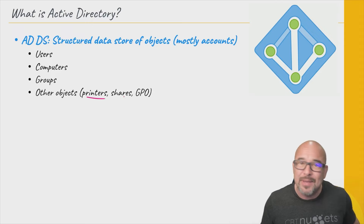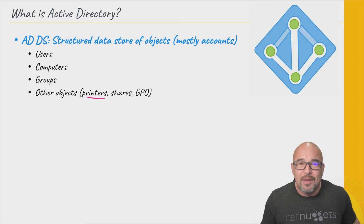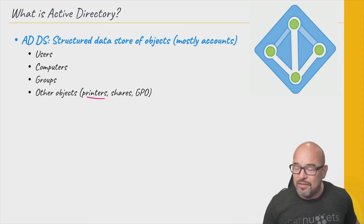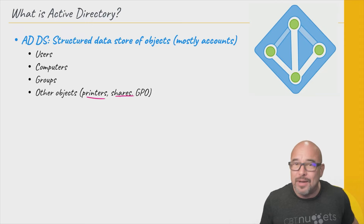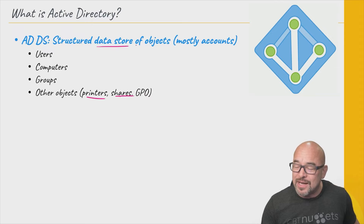Having printers in Active Directory makes them easier to find for your users, especially in larger organizations where they might be going into a building on a campus they've never been in before and need to find a printer. You can make them easy to find in Active Directory. Shares can also be easily found in Active Directory — they don't have to be put there, but that's certainly a possibility, and it makes it very searchable.